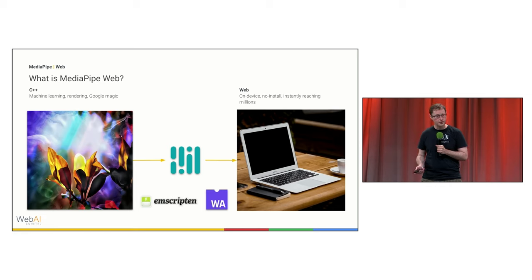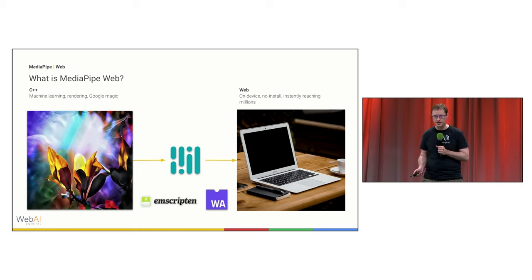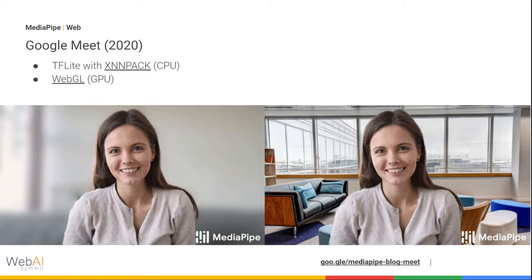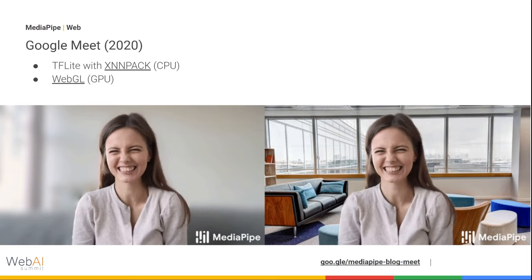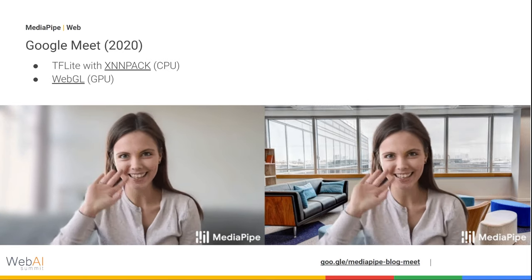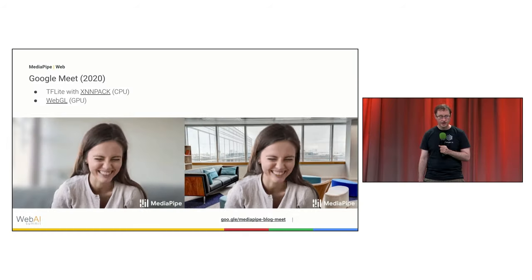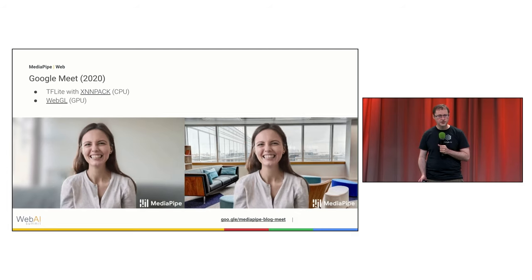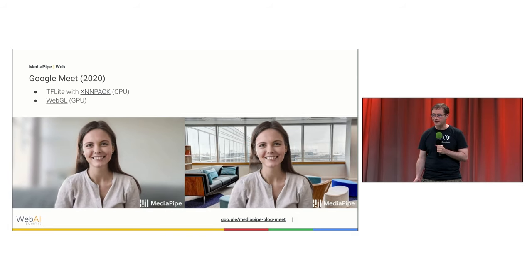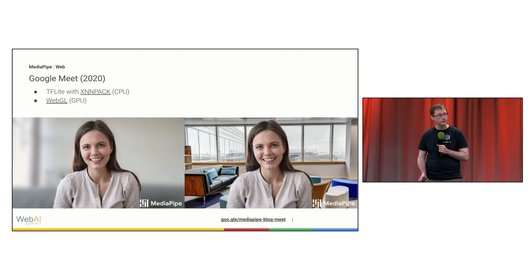One key component is Emscripten, the system we use to transpile all of our C++ code into WebAssembly, before wrapping the results into smaller and more focused TypeScript APIs for use in the browser. As an example, for those of you joining remotely who are blurring or replacing your background in Meet, that's being done with MediaPipe, and was our first major web launch back in 2020. It was made for web using a lot of code initially developed for other platforms, and the core tech remains fully cross-platform.